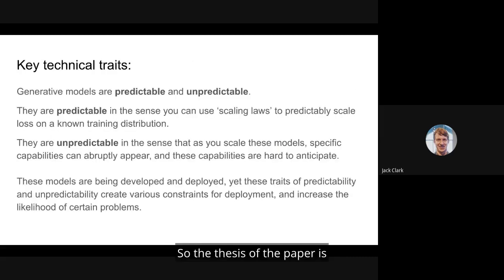The thesis of the paper is that the key technical traits of these models are important. They're both predictable and unpredictable. These models are predictable in the sense that at a high level, you can use scaling laws to scale their loss on a known training distribution. But they're unpredictable in the sense that as you scale these models, specific capabilities can abruptly appear, and these capabilities can be hard to anticipate.